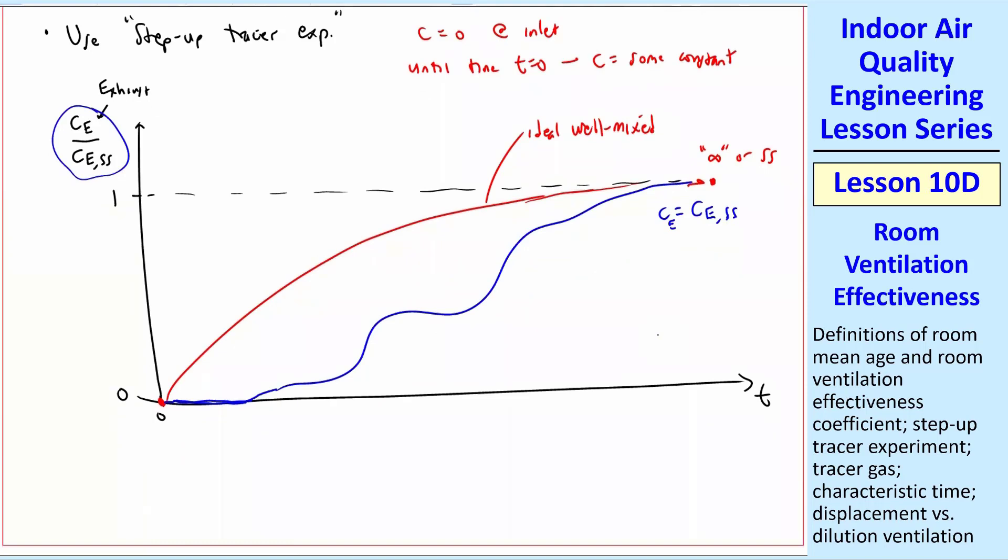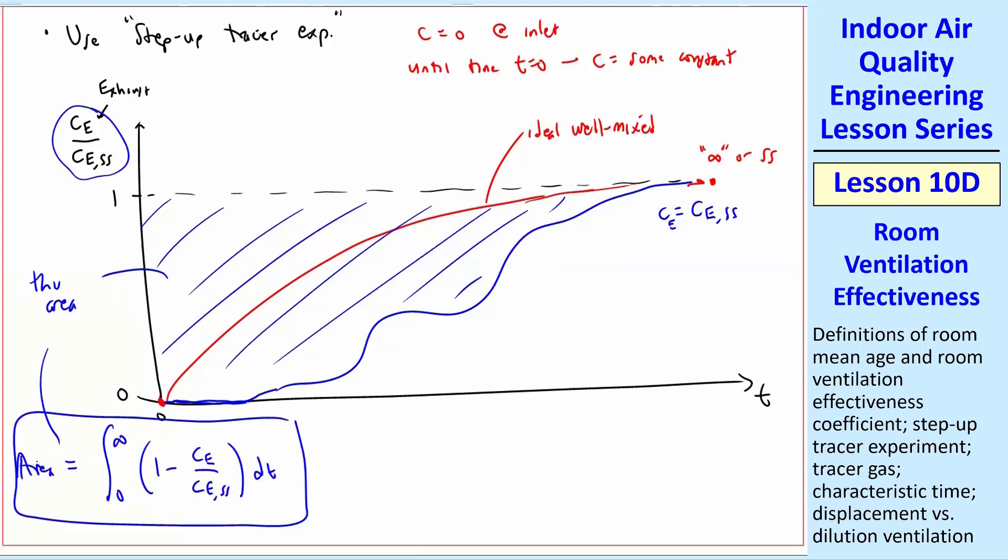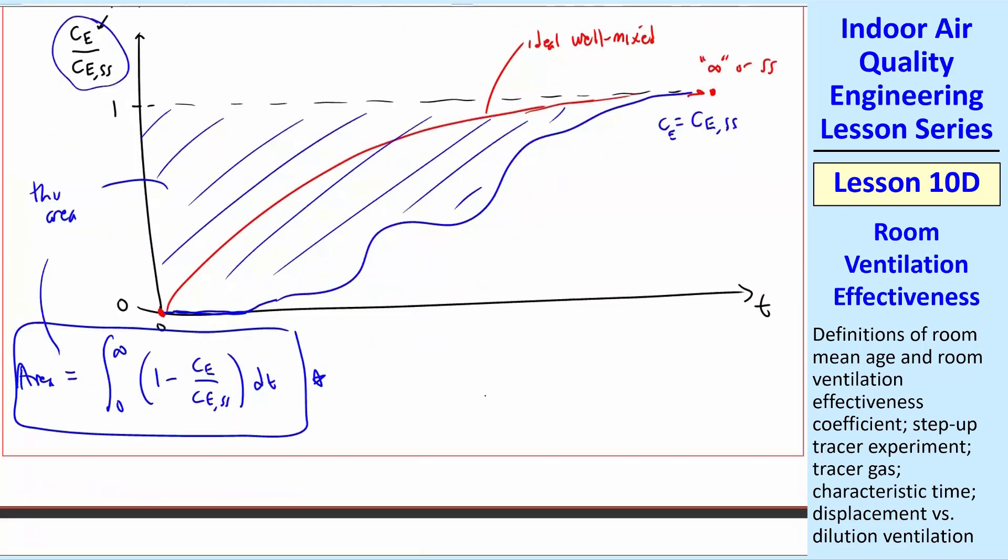If you think about it, the integral to the left of this and under one, this whole shaded area, is equal to the integral zero to infinity of one minus C E over C E SS dt, and that will end up being the denominator in our equation that we'll define in a minute here. Keep that in mind.